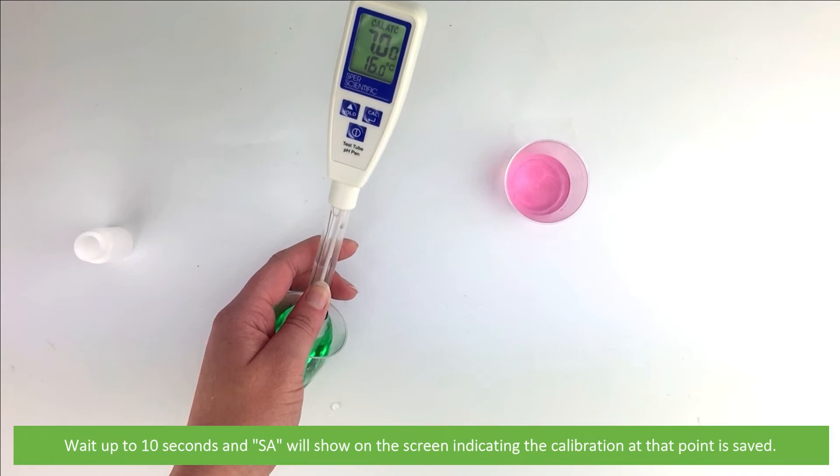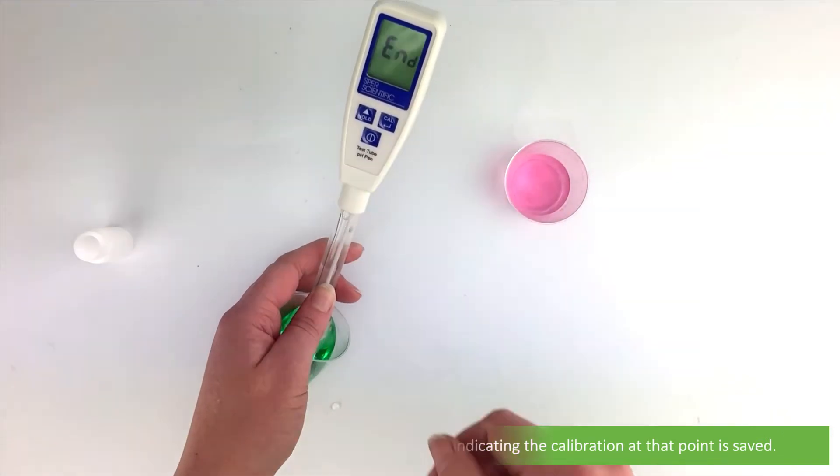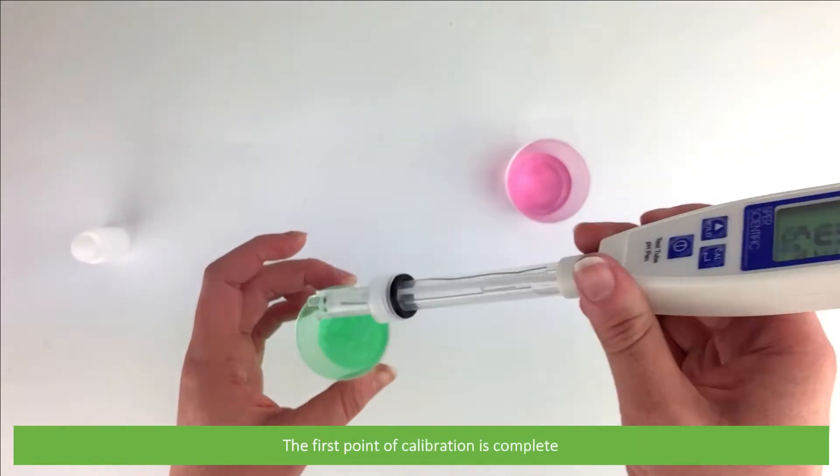Wait up to 10 seconds, then SA will show on the screen indicating the calibration at that point is saved. The meter will briefly display end and return to measurement mode. The first point of calibration is complete.